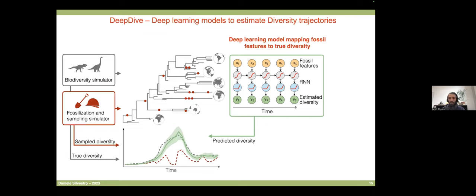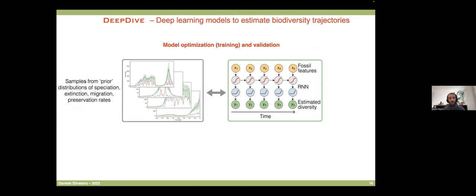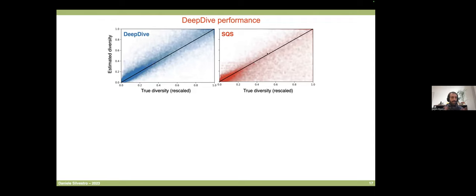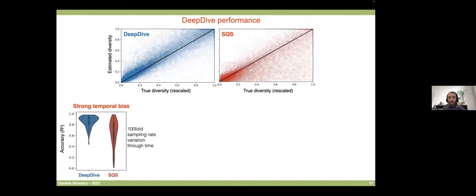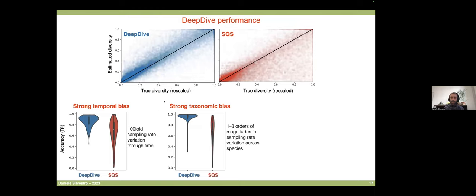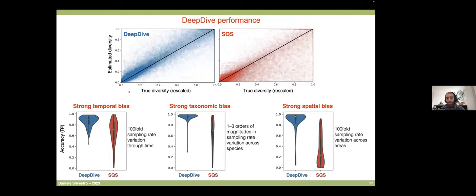We train this model on hundreds of thousands of simulations — since we generate the data ourselves, we can generate as many as we want. We validate by comparing to the state-of-the-art non-AI model for estimating diversity, and found that under different settings and preservation scenarios our model consistently outperforms the alternatives. Once we are happy with model performance under temporal, taxonomic, and spatial biases, we can apply it to real data.